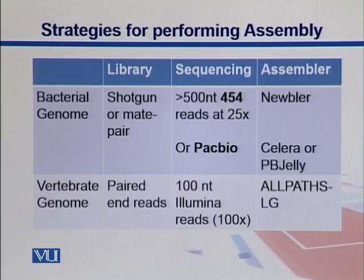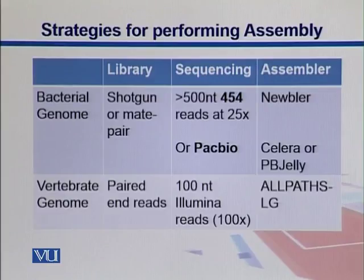For vertebrate genome, you can have paired-end reads which are 100 nucleotides from Illumina. For that you need a higher coverage of 100x, which is expected for a eukaryotic genome. The assembler to be used with these Illumina reads is ALLPATHS-LG. We will talk about these assemblers in a later section coming up in a few more sections from now.